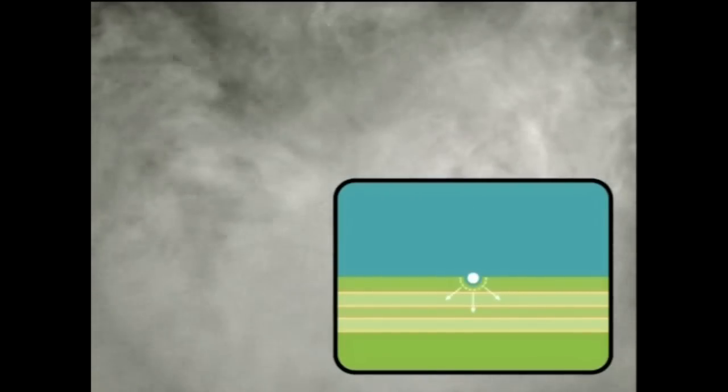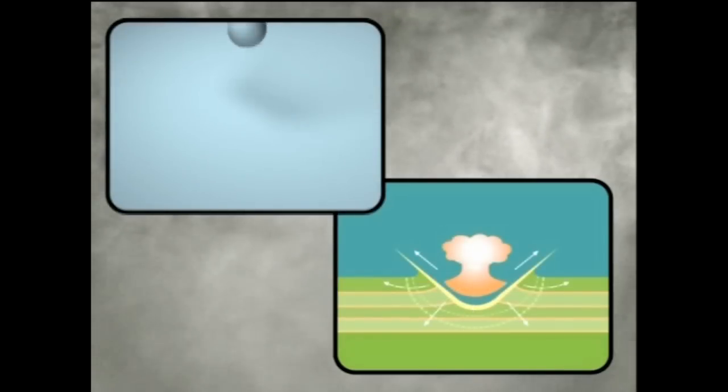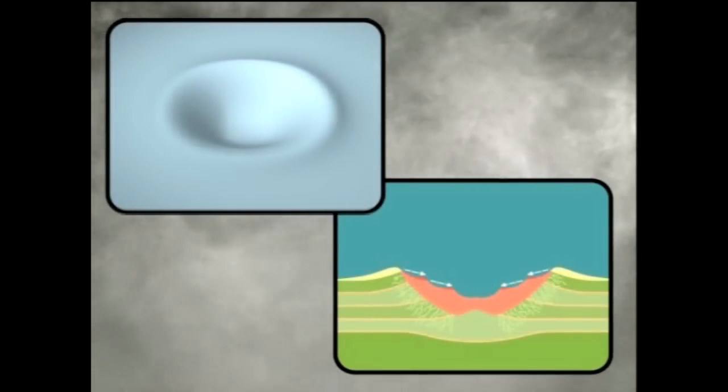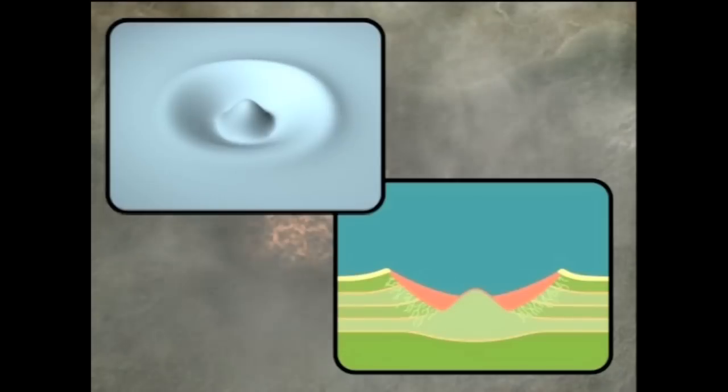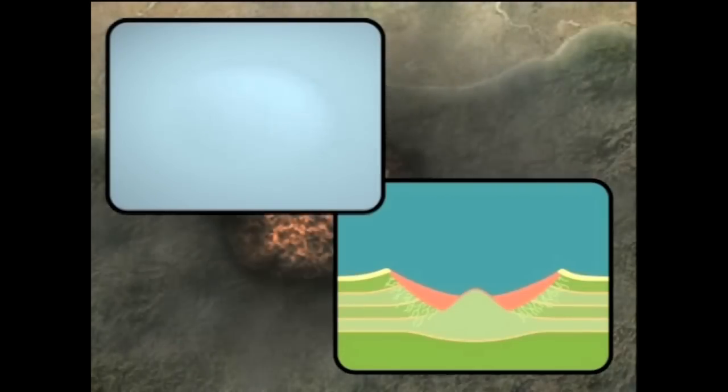As only happens in very large impacts, the Earth's crust rebounds violently, like the splash from a drop of water in a pond, creating a central uplift in the middle of the crater.